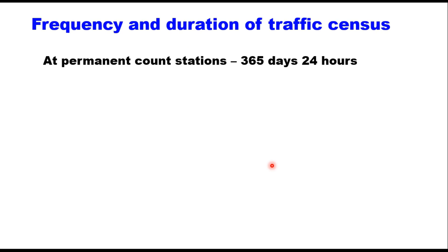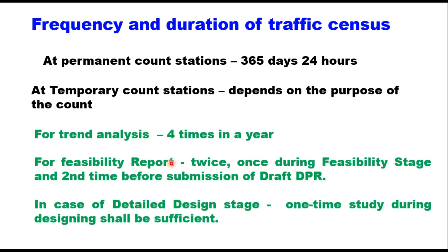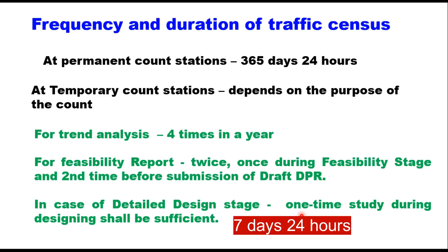Regarding frequency and duration: at permanent count stations, traffic census is done 365 days a year and 24 hours a day. At temporary count stations, it depends upon the purpose of the count. For trend analysis, it should be done four times a year. For a feasibility report, it should be done twice — once during the feasibility stage and a second time before submission of the draft detailed project report. For the detailed design stage, one study during designing shall be sufficient. Each time a census is undertaken, it should be done for seven continuous days for 20 hours in both directions.